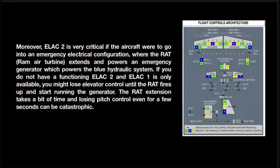Moreover, ELAC 2 is very critical if the aircraft were to go into an emergency electrical configuration, where the RAT — RAM air turbine — extends and powers an emergency generator which powers the blue hydraulic system. If you do not have a functioning ELAC 2 and only ELAC 1 is available, you might lose elevator control until the RAT fires up and starts running the generator. The RAT extension takes a bit of time, and losing pitch control even for a few seconds can be catastrophic.